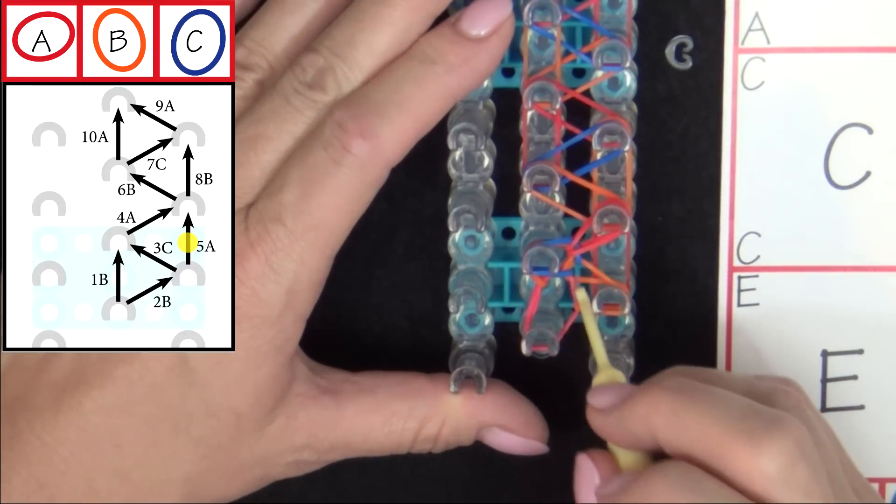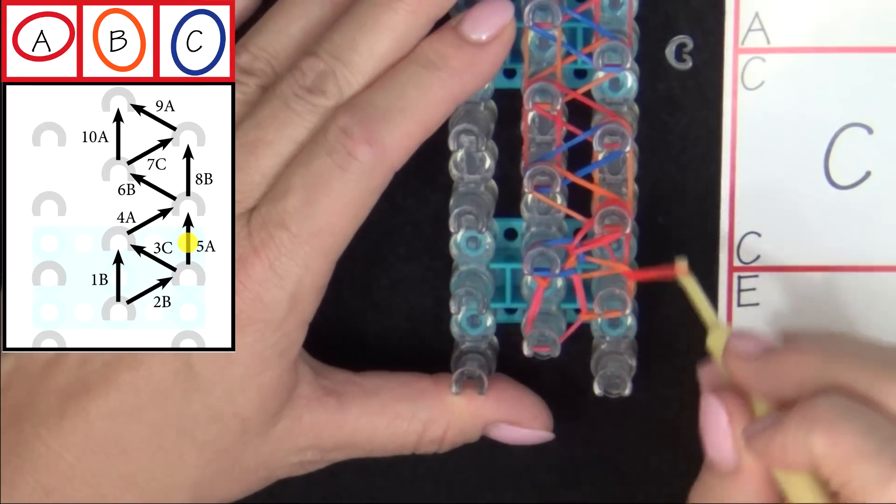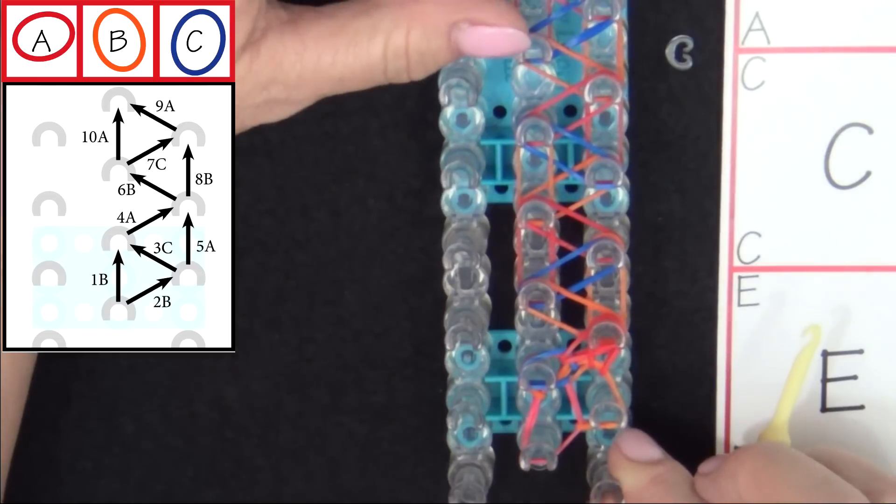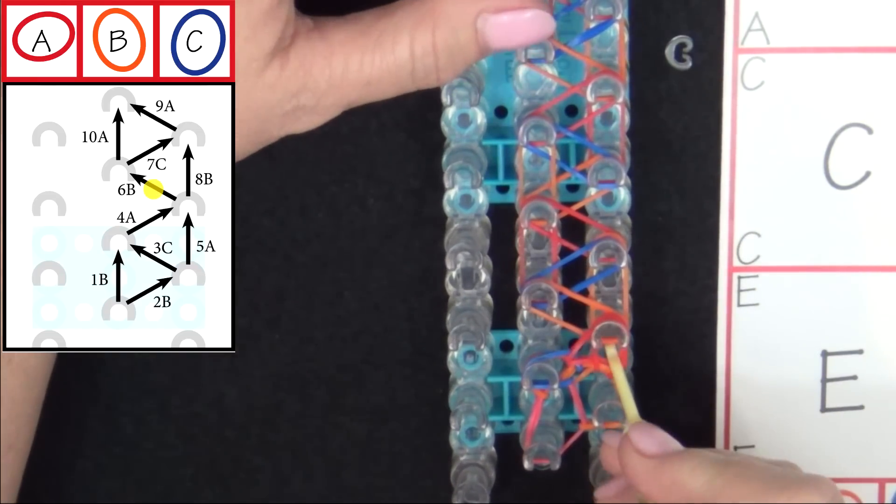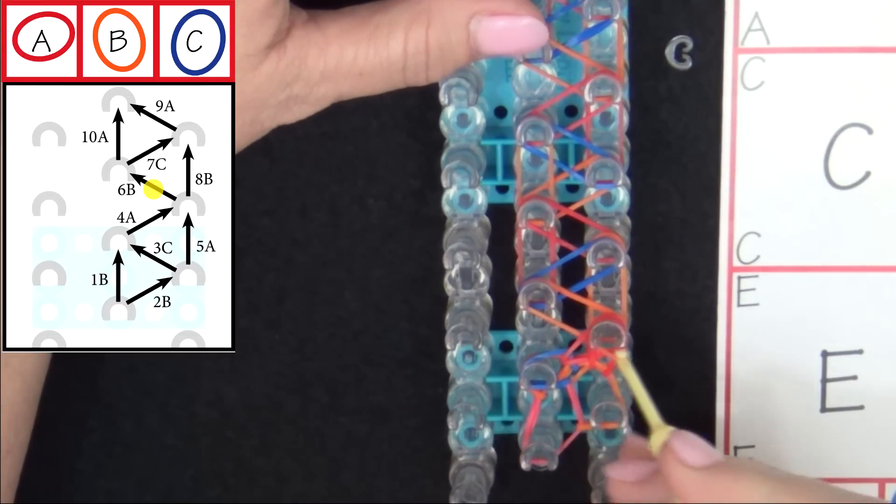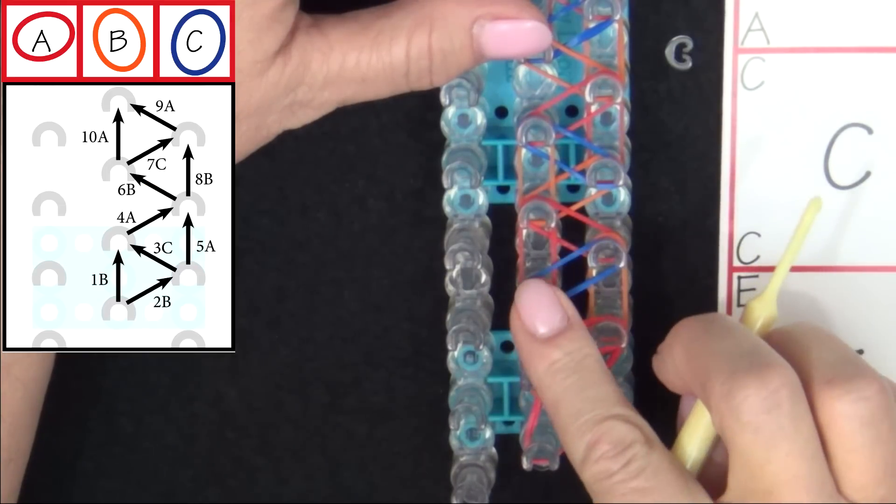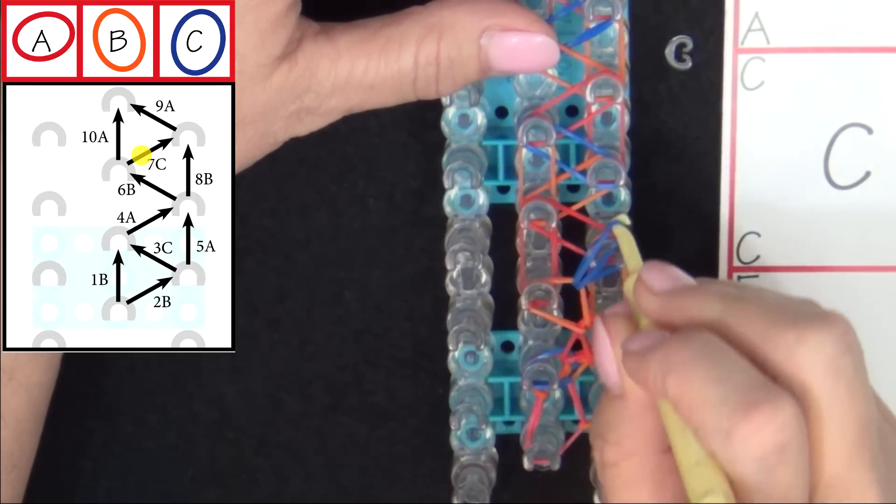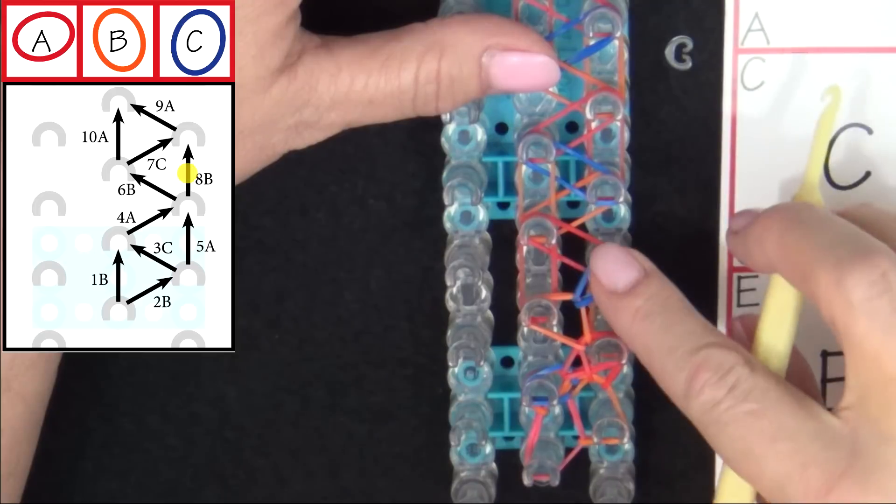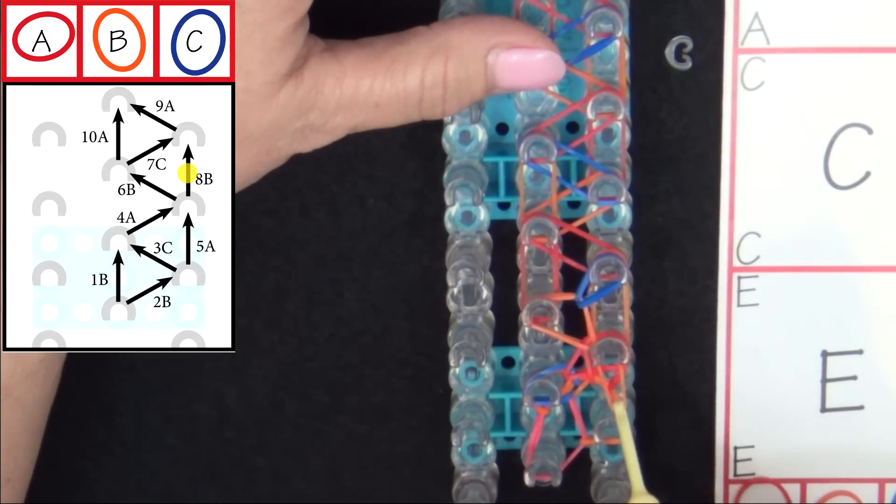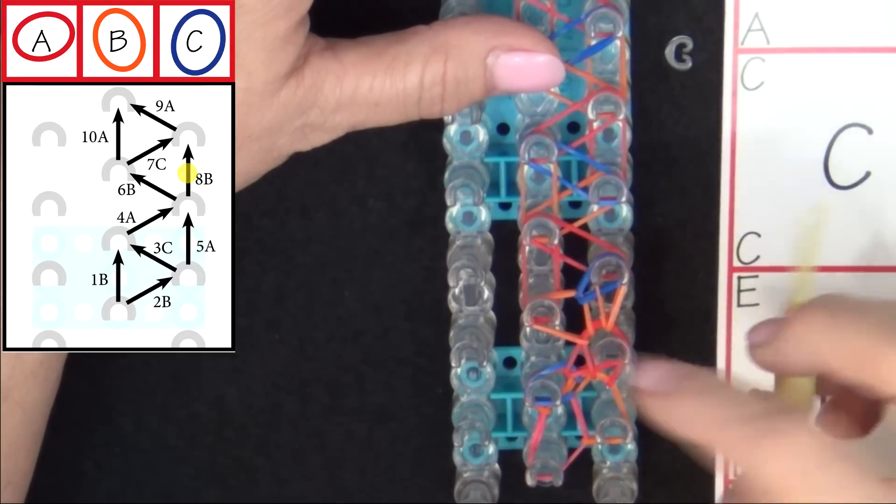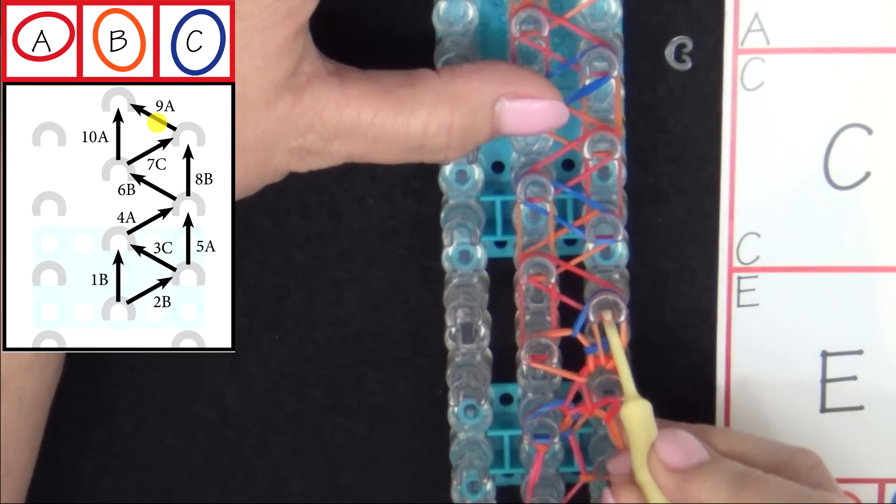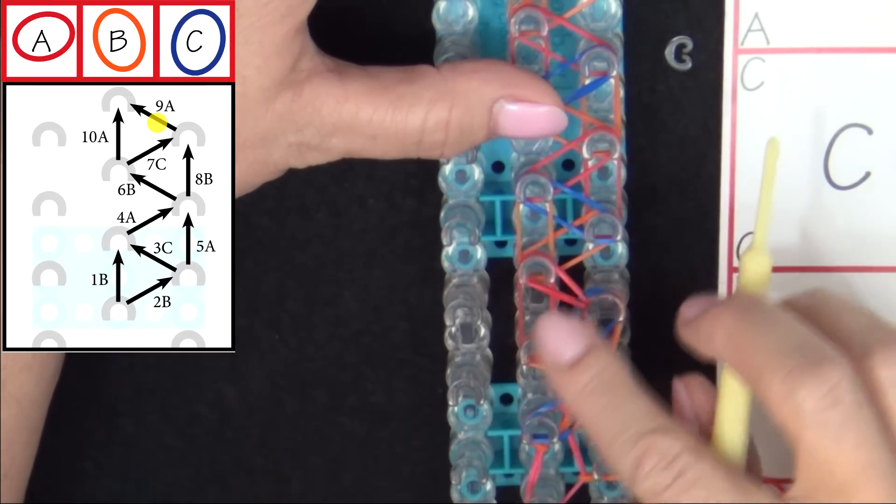5A will be looped forward. 6B. 7C. 8B. 9A. And 10A.